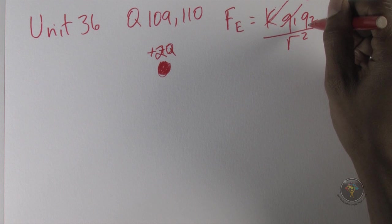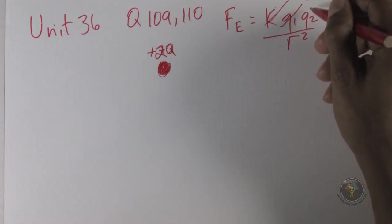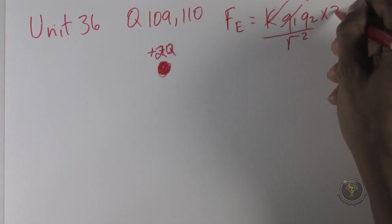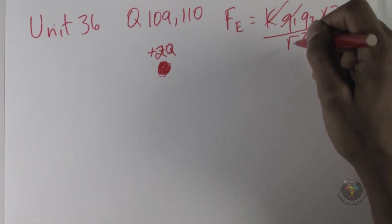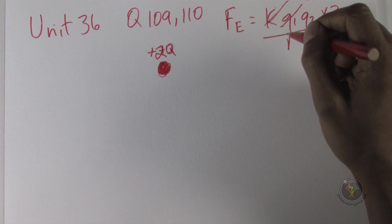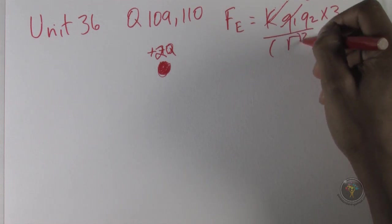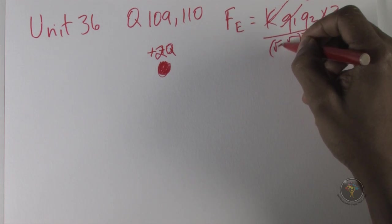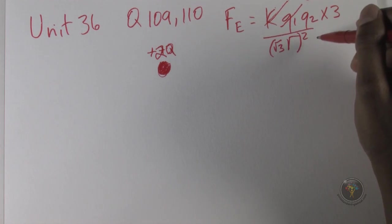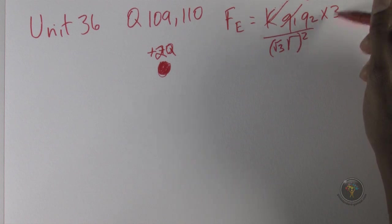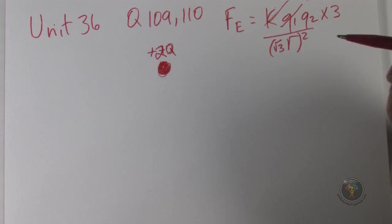Because then root 3 squared becomes 3, then the 3s cancel and the equation is constant or back to where we were. So multiplying the distance r by root 3 keeps the equation constant.